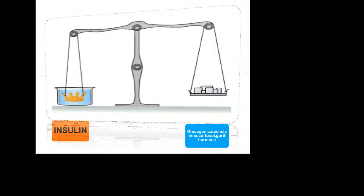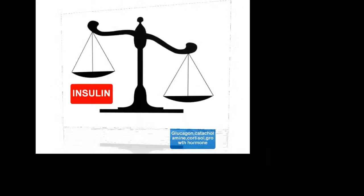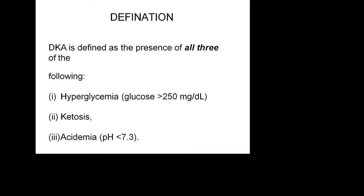This is the normal balance between insulin and other hormones. Insulin is an anabolic hormone. Other hormones include glucagon, cortisol, and growth hormones. Whenever this balance is not maintained — that is, insulin is reduced or zero and other hormones are increased — this leads to imbalance, which causes diabetic ketoacidosis.